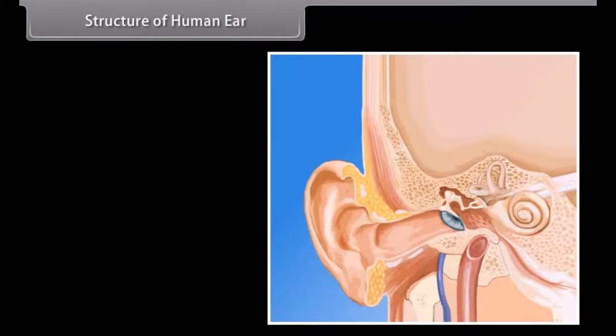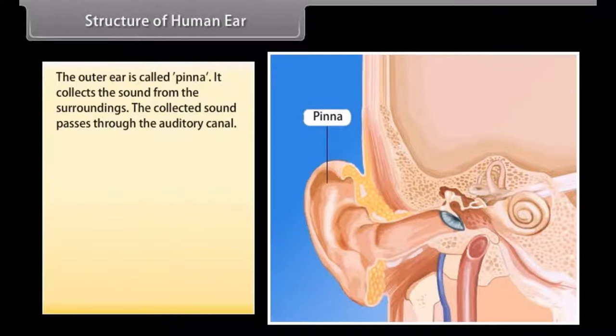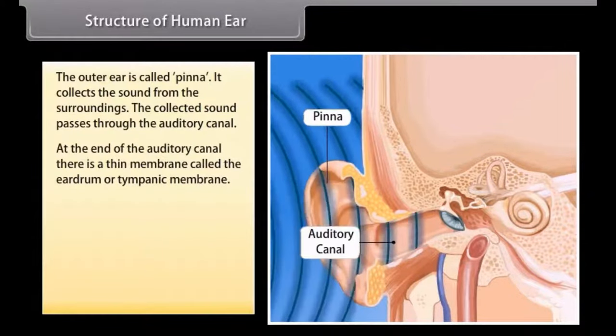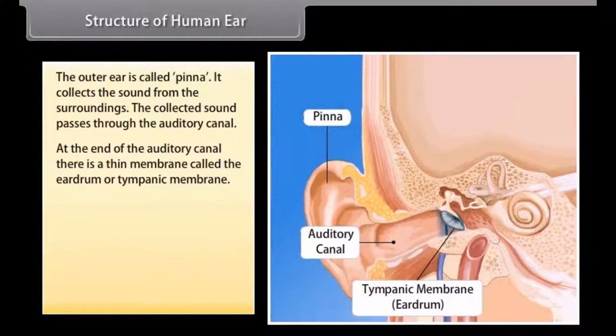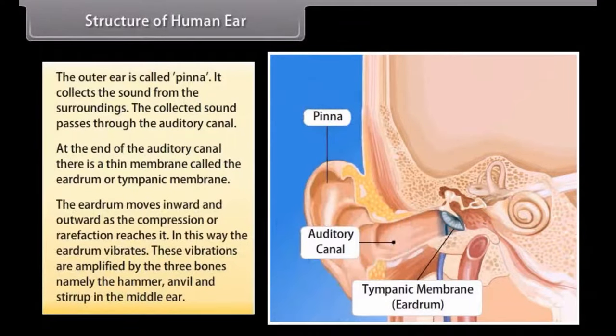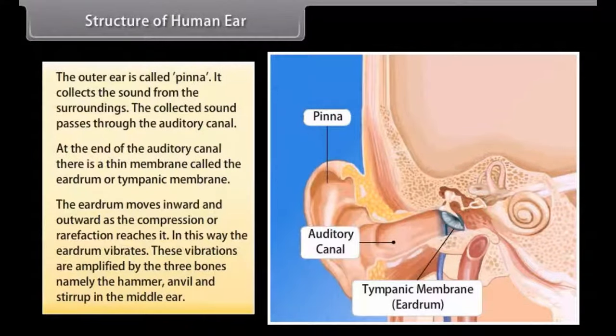Structure of the human ear. The ear consists of three basic parts the outer ear the middle ear and the inner ear. Each part of the ear has a specific role in the task of detecting and interpreting sound. The outer ear is called pinna. It collects the sound from the surroundings. The collected sound passes through the auditory canal. At the end of the auditory canal there is a thin membrane called the eardrum or tympanic membrane. The eardrum moves inward and outward as the compression or rarefaction reaches it. In this way the eardrum vibrates.